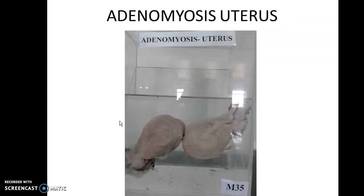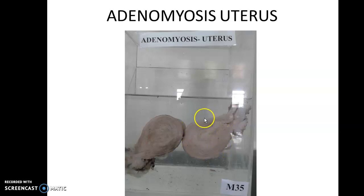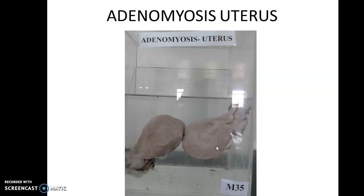Coming to the next specimen, which is a specimen of uterus. What you find here is that the uterus shows trabeculations — fine, coarse lines seen all around the uterine wall. The uterus does appear to be enlarged. This is called trabeculations and this is a feature of adenomyosis.